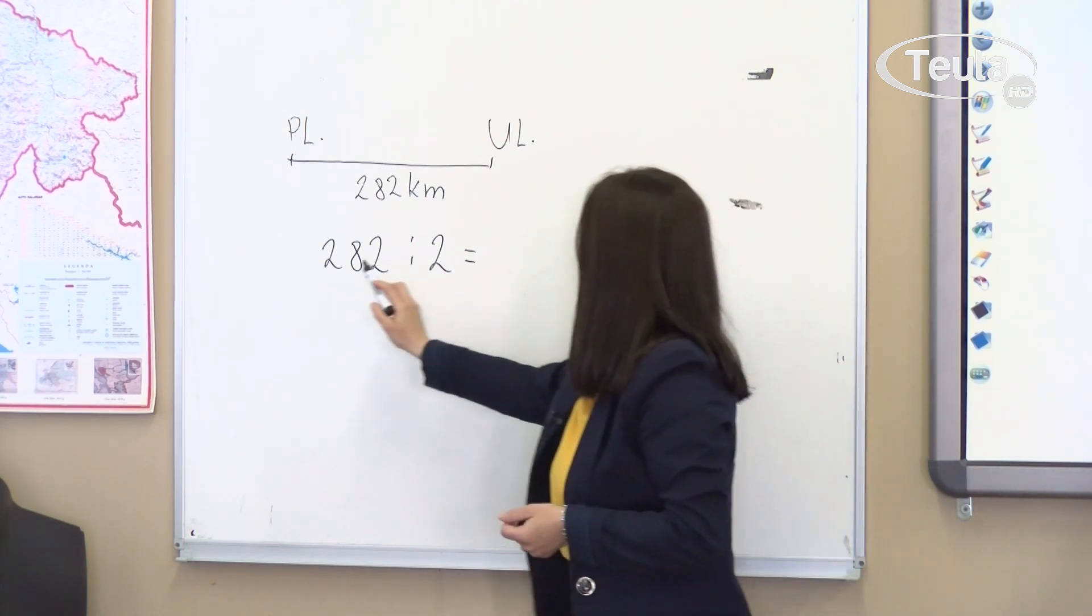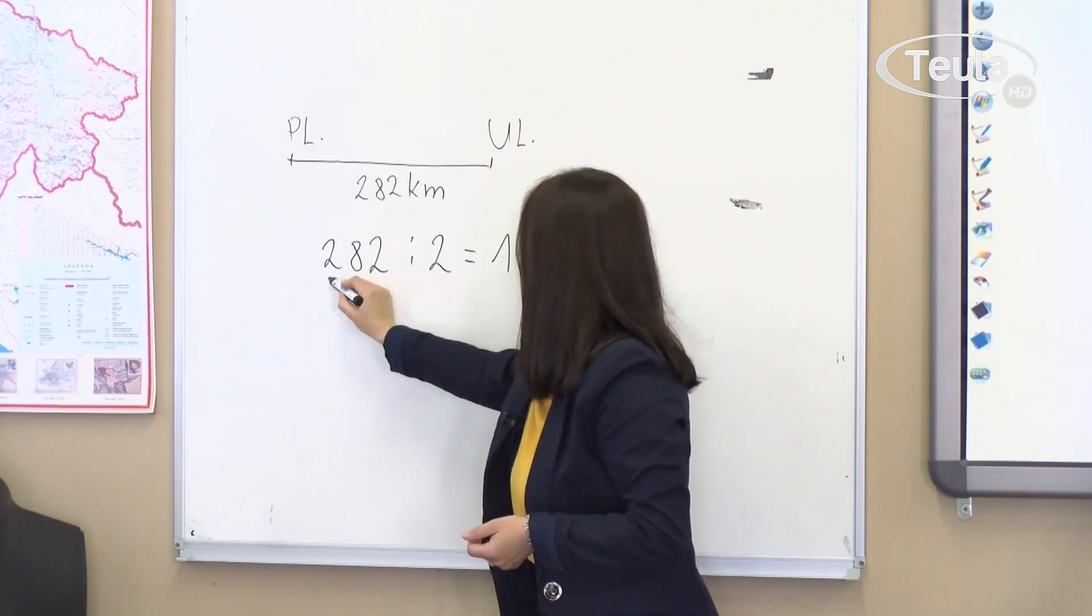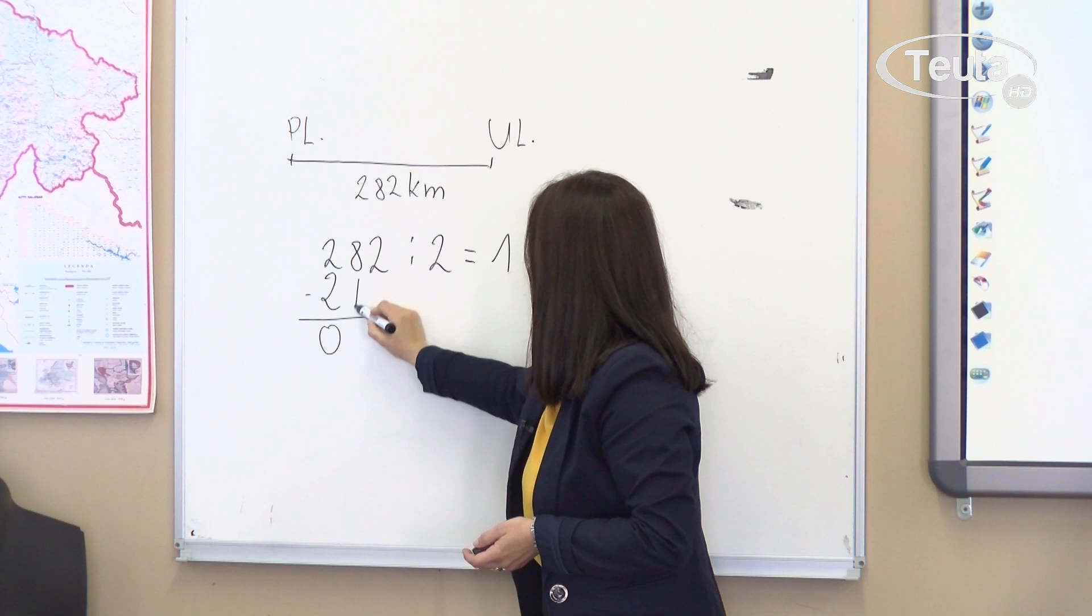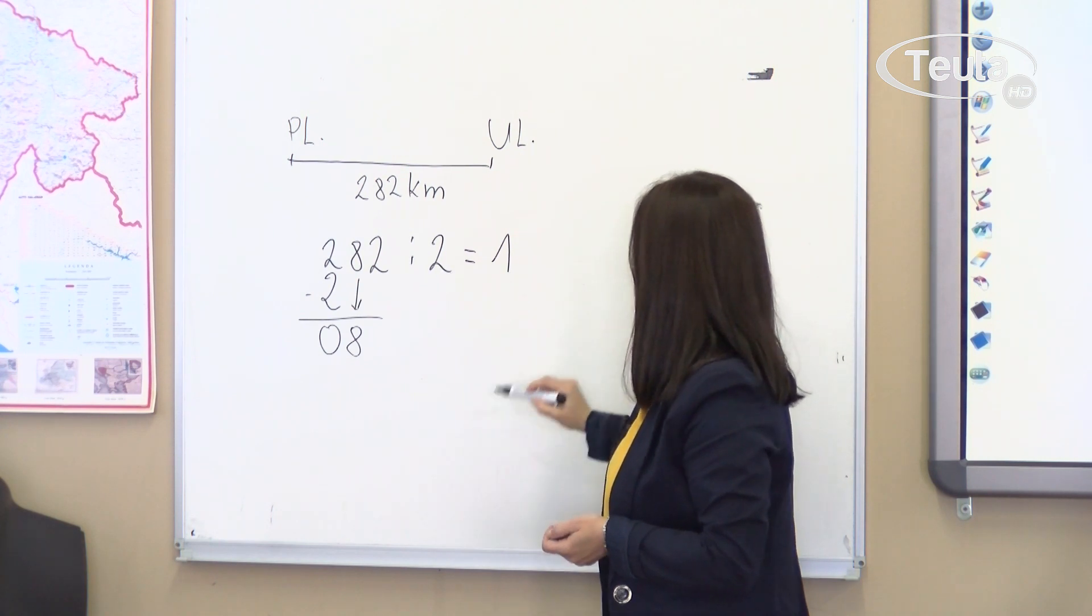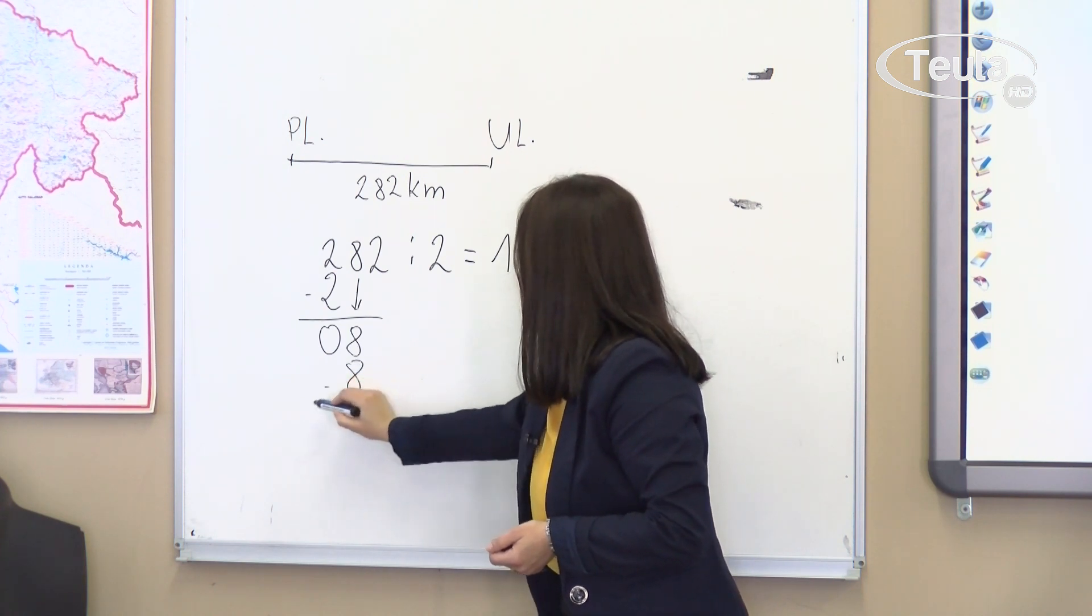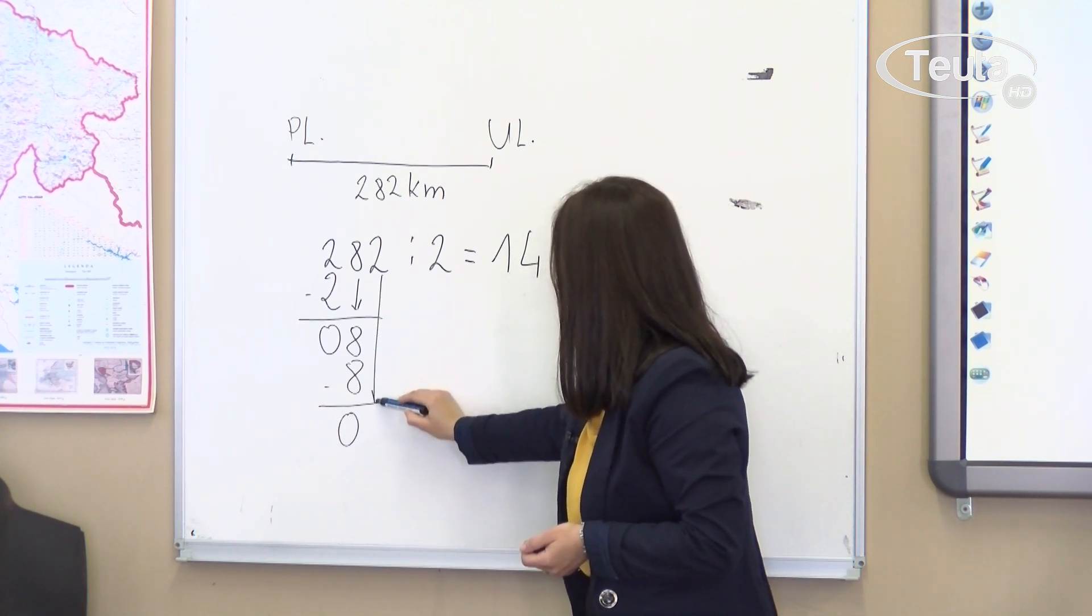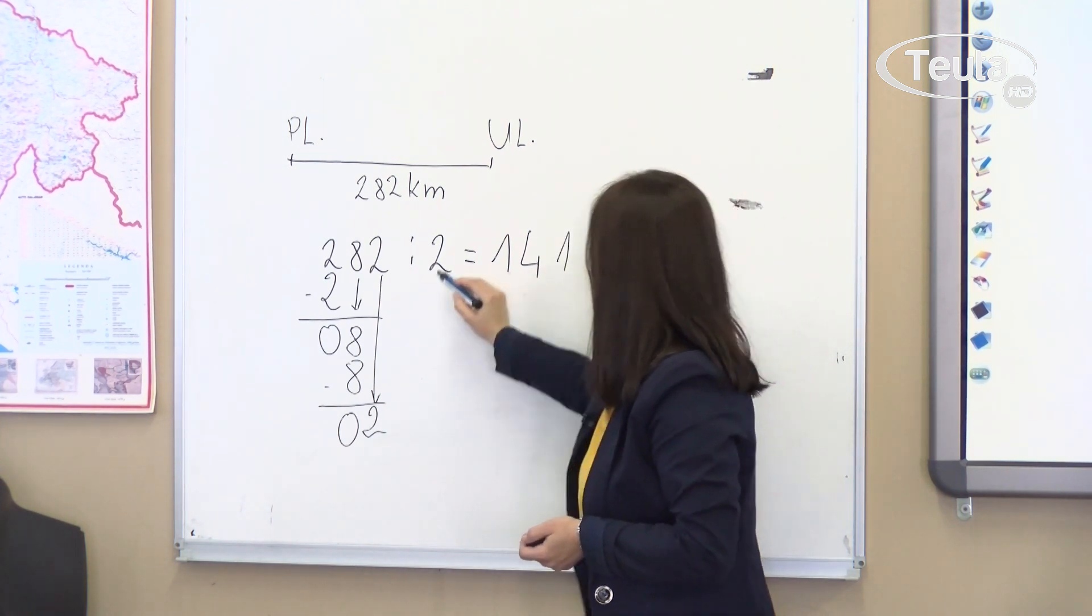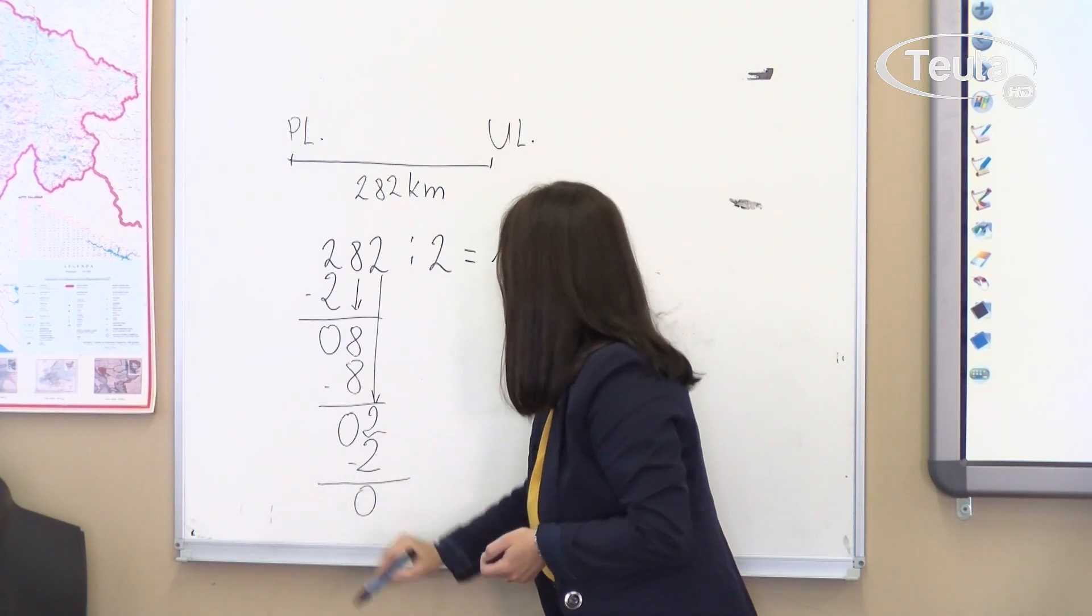2 divided by 2 is 1. 1 times 2 is 2. Subtract: 2 minus 2 equals 0. Now bring down the 8. 8 divided by 2 is 4. 4 times 2 is 8. Subtract: 8 minus 8 equals 0. Bring down the next digit. 2 divided by 2 is 1. 1 times 2 is 2. Subtract: 2 minus 2 is 0.